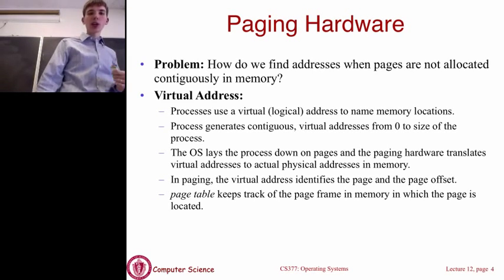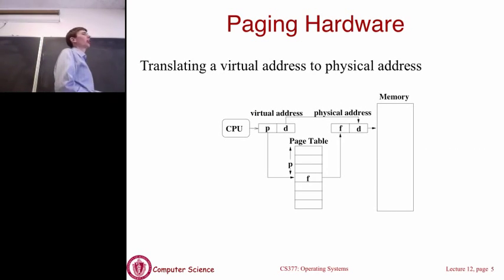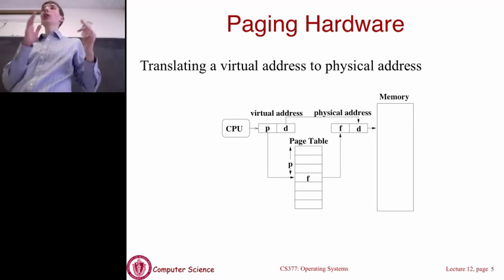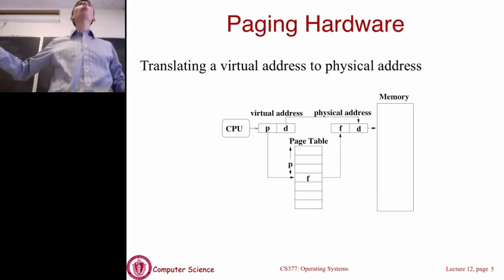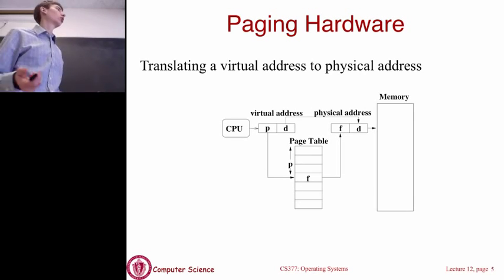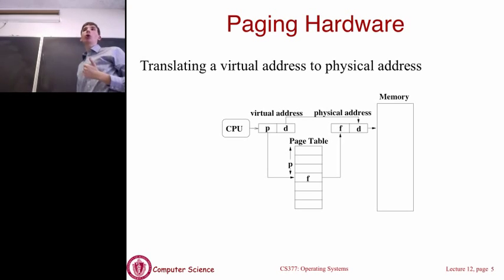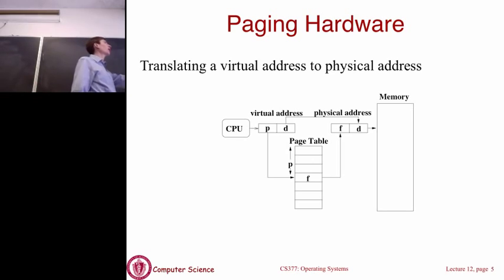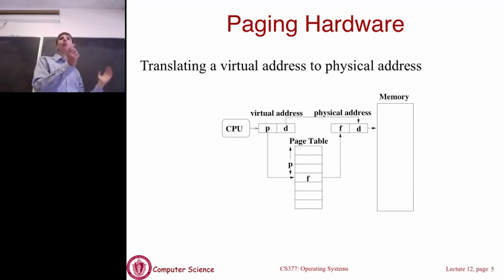We're translating virtual to physical addresses, and the way we do this is by introducing a page table. Since pages in logical memory are mapped to some frame in physical memory, we need to be able to do that lookup. A virtual address now includes a page number and an offset into that page. So if the virtual address says page three, we go to the page table — which is just a lookup table from page number to frame number — and it might tell us that page three is stored in frame 20. The pages themselves can be stored anywhere in physical memory, scattered all over the place. The page table tells us where a specific page is actually located in physical memory.